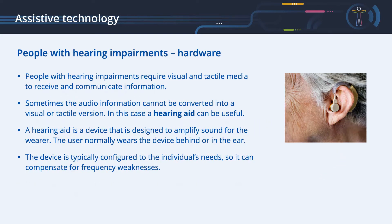Assistive technology for people with hearing impairments — Hardware. People with hearing impairments require visual and tactile media to receive and communicate information. Sometimes the audio information cannot be converted into a visual or tactile version. In this case, a hearing aid can be useful. A hearing aid is a device that is designed to amplify sound for the wearer. The user normally wears the device behind or in the ear. The device is typically configured to the individual's needs so it can compensate for frequency weaknesses.